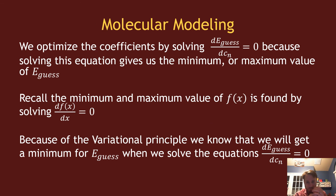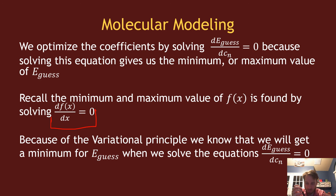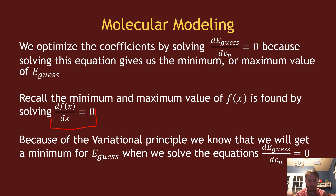This minimum we're solving for is like any other minimum: dE/dc = 0. Because we rely on the variation principle — that we will never go below the true value — we know that this minimum is the best guess possible. Without the variation principle, we'd have no way of knowing whether a lower energy represents a better or worse answer.